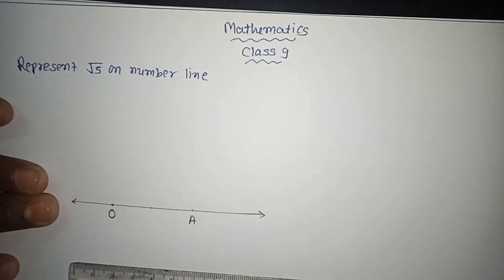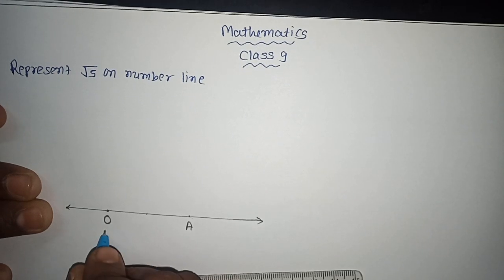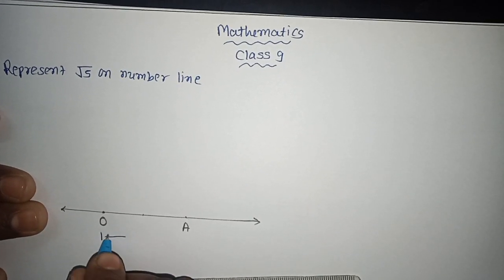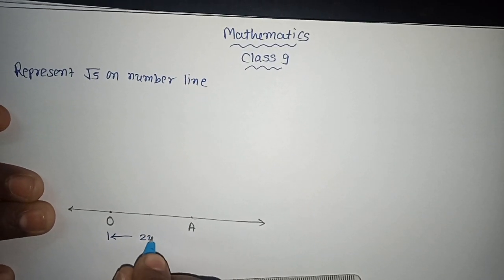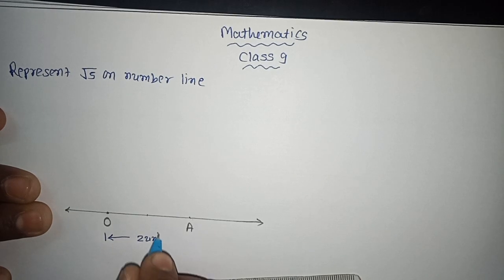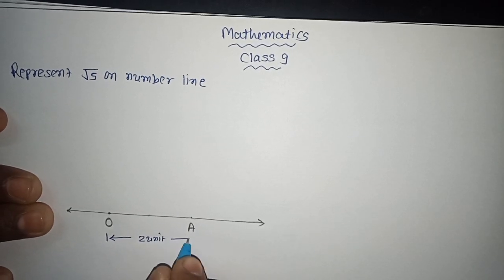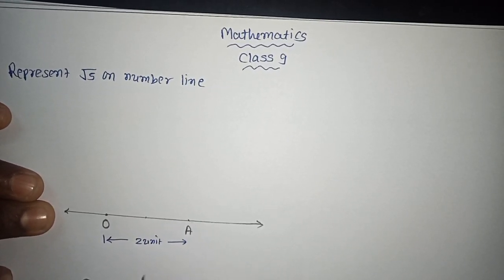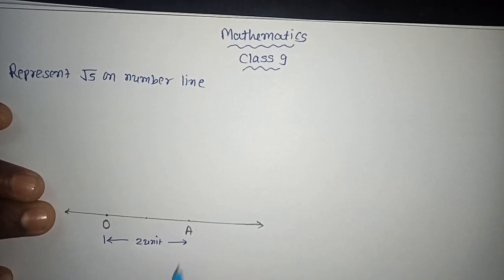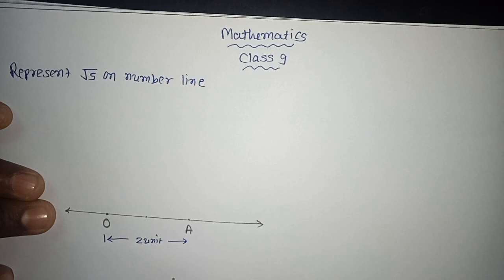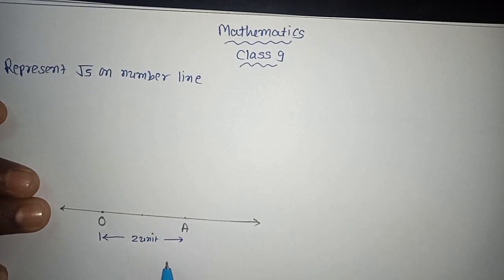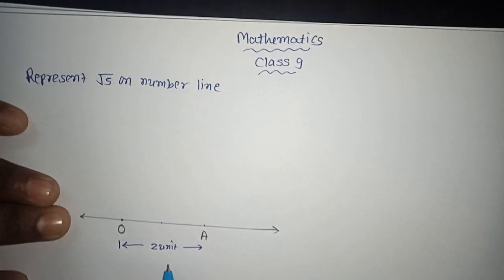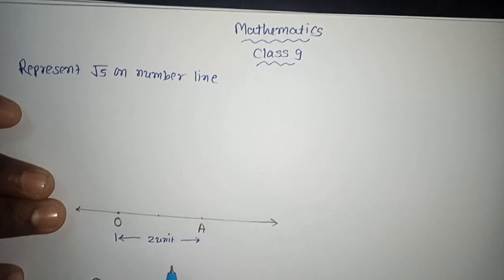OA is equal to 2 units. As we have taken 2 centimeters equal to 1 unit, so 2 units is equal to 4 centimeters.